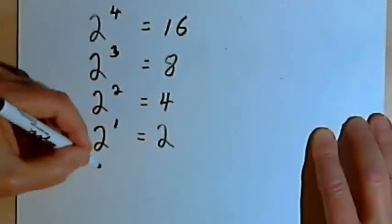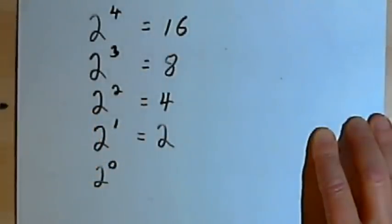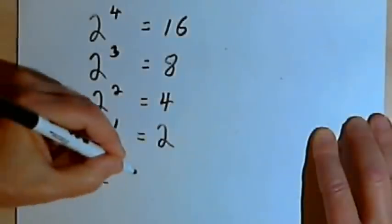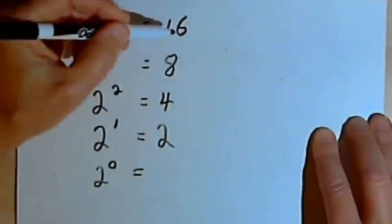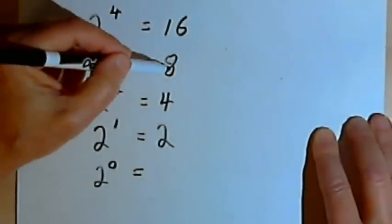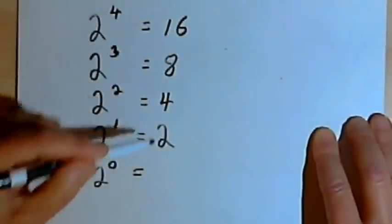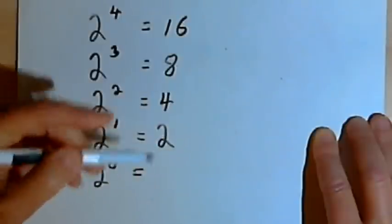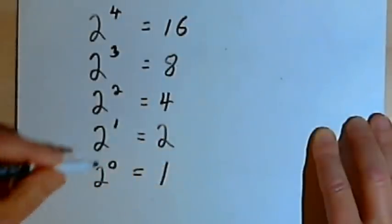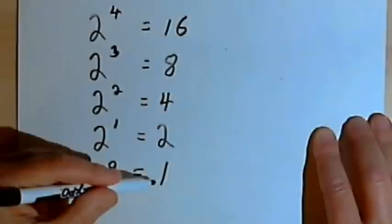And that gets us down to 2 to the first. Well, let's continue the pattern. Let's consider 2 to the zero. Well, if we worked our way down the pattern by dividing the previous number, I've got to divide 2 by 2. 2 divided by 2 is 1. So I end up with 2 to the zero equals 1.